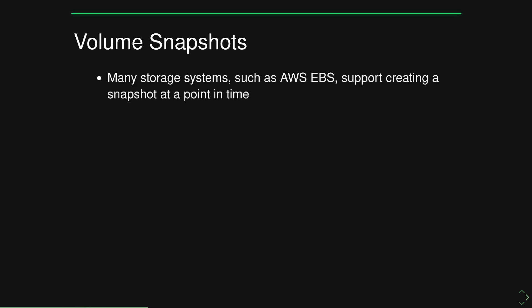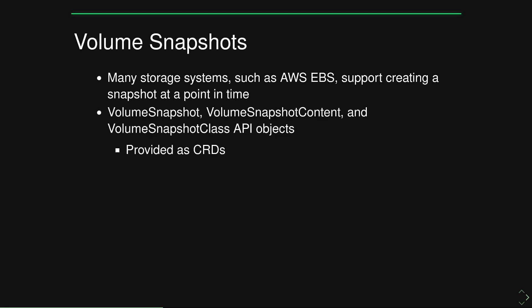Most storage systems — if you consider AWS EBS or an on-premises storage device — have some way to create a snapshot at a given point in time. Future writes to the underlying storage don't impact that snapshot, and you can often take that snapshot and restore it. Kubernetes has certain custom resource definitions, or CRDs, that allow you to manage snapshots.